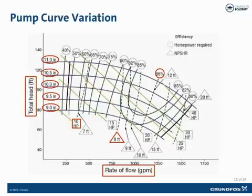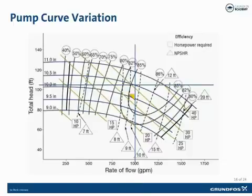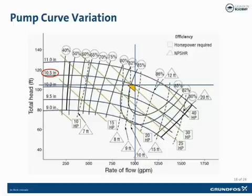The impeller is always cut to the next largest one-eighth inch increment. After the system designer has determined the head requirement at design flow, a suitable pump is selected. For this example, we'll use a desired flow of 1,000 gallons per minute at 103 feet of head, shown as a triangle at the intersection of design flow and design head. The actual impeller shipped with this pump will be a 10.5-inch impeller. At this design point, the efficiency would be 85.2%, the brake horsepower required would be 30.1 BHP, and the net positive suction head required would be 9.5 feet.